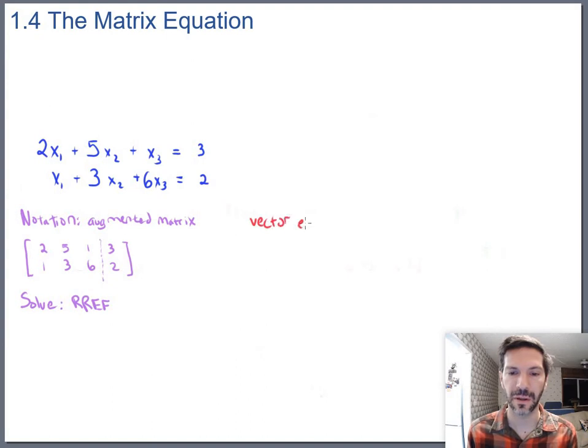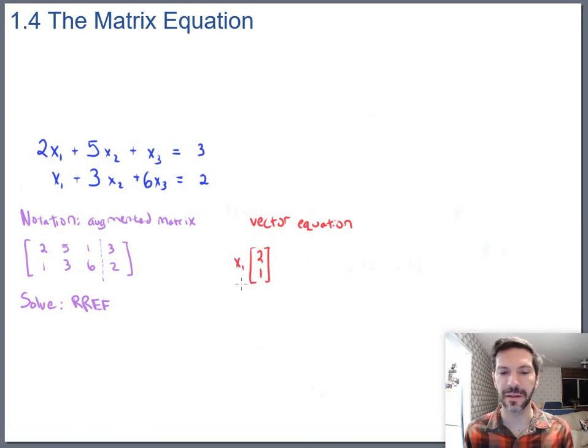The second notation that we have is the vector equation form, and that's where we look at the coefficients of x1 as being a vector. So we say x1 is multiplied by 2 and by 1. And you say x1 is multiplied by that—order doesn't matter here, multiplication is commutative, so you could put the x1 after or before, but it's traditional to put it before.